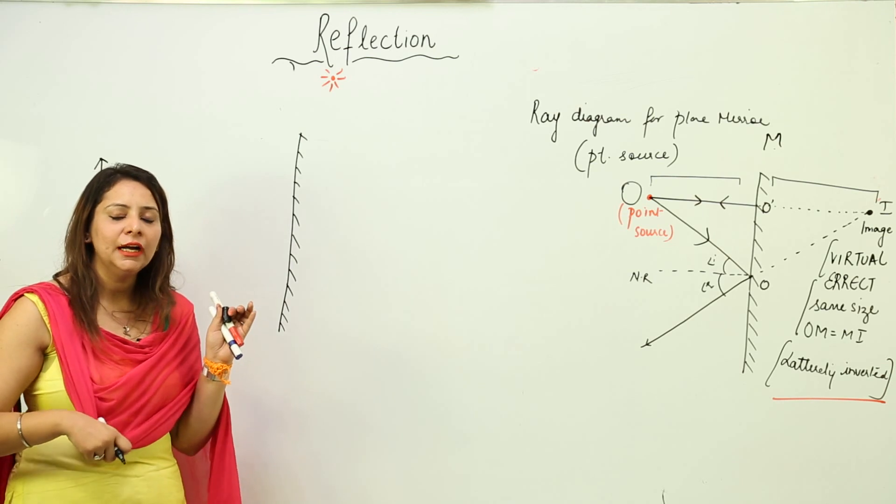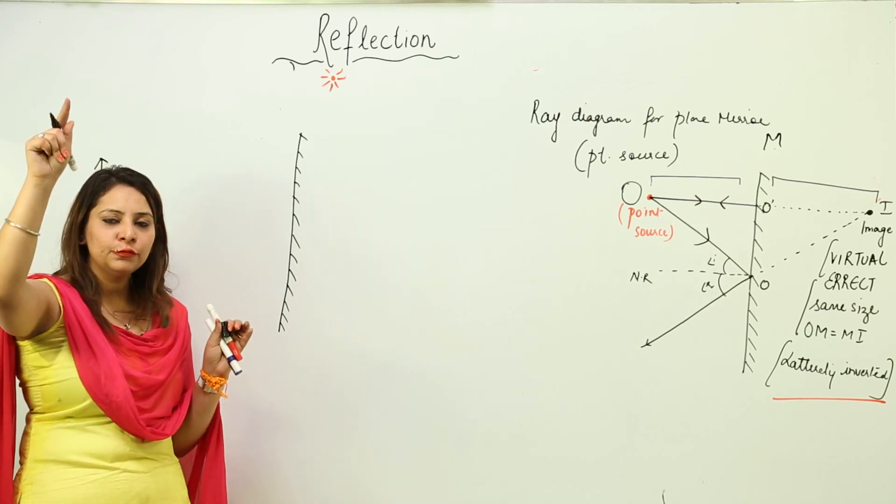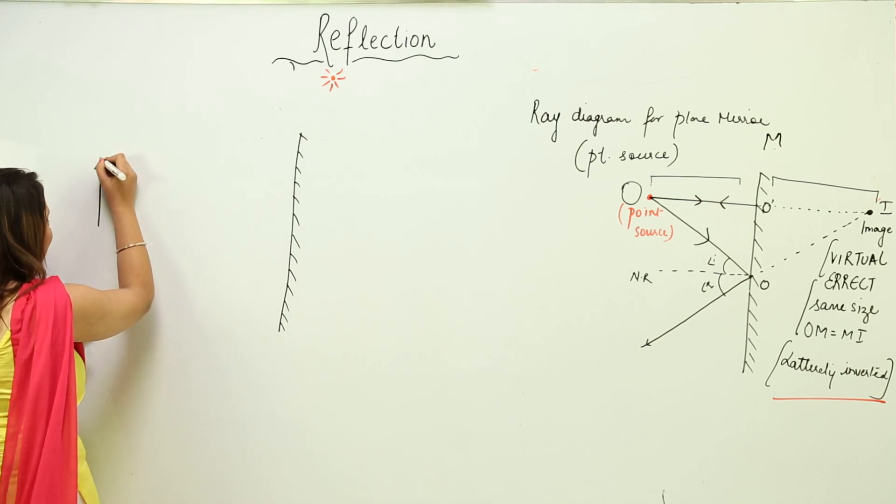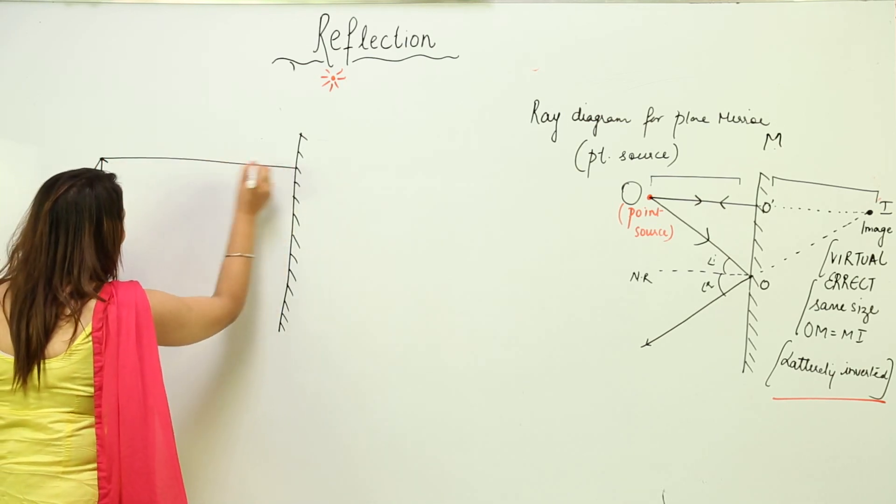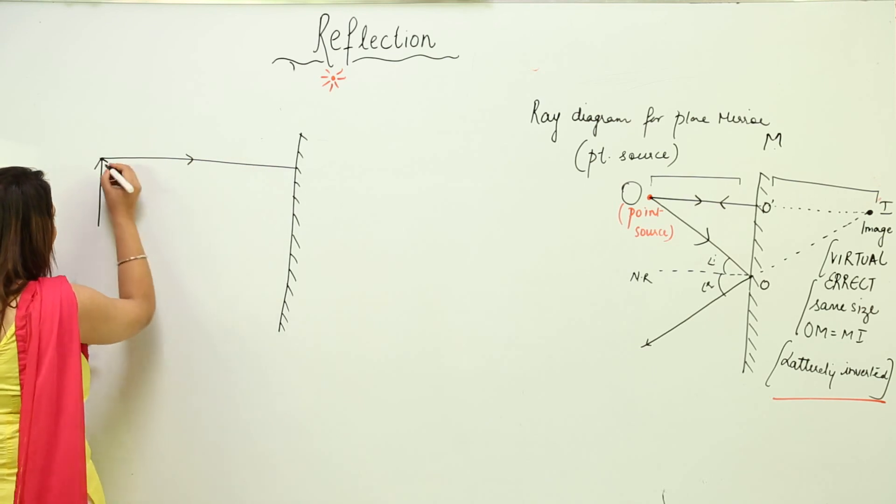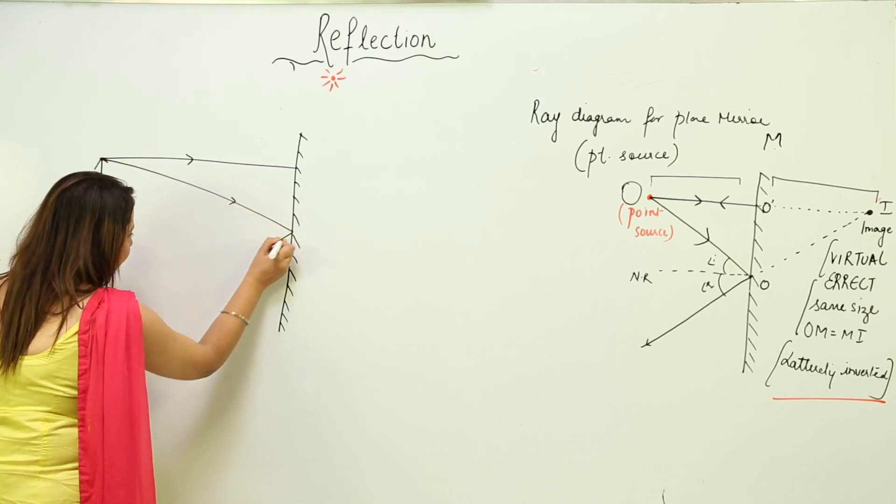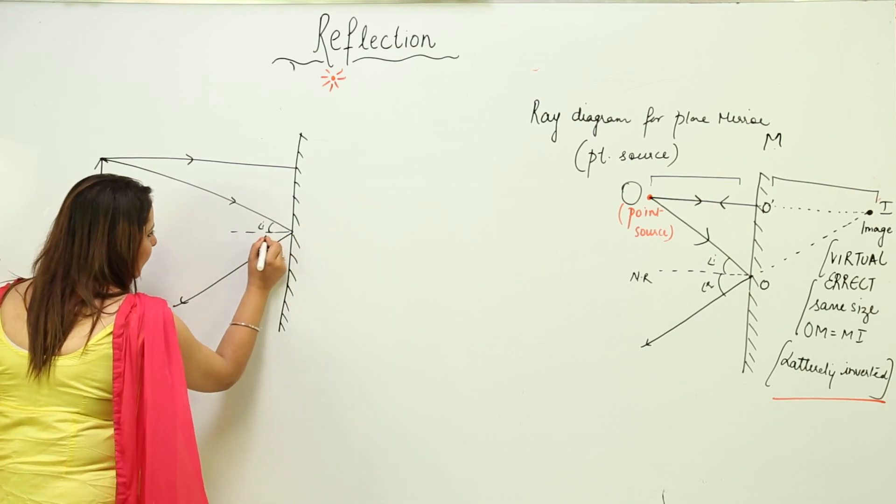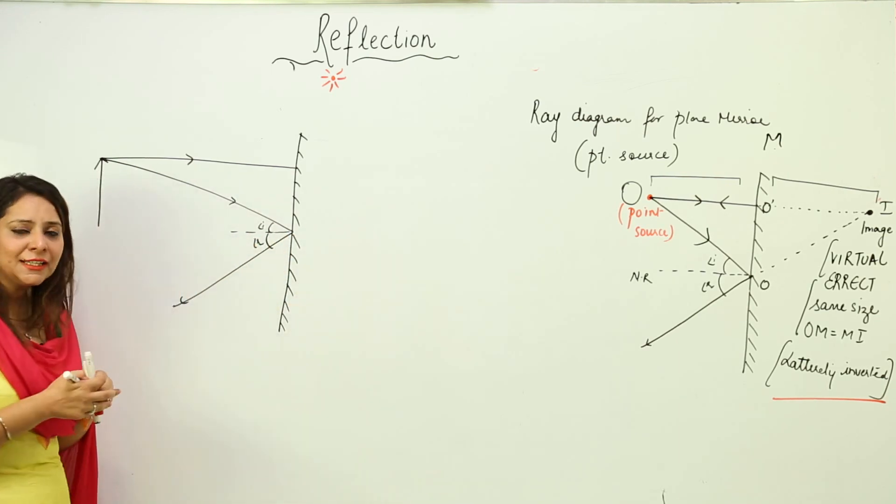Whenever we're making a ray diagram, we'll consider two points: the upper point and the lower one. We'll take the rays from this point. This is one ray falling perpendicular, and this is one ray falling at a certain angle that gets reflected. Let's make another ray also from the lower point.